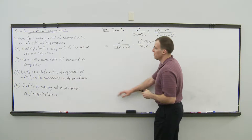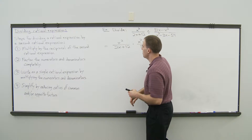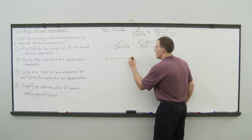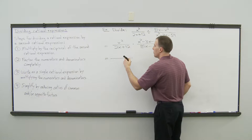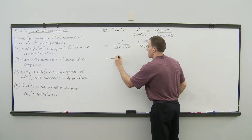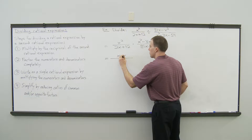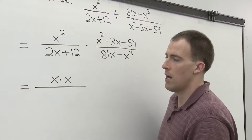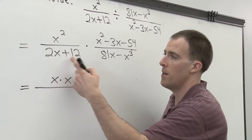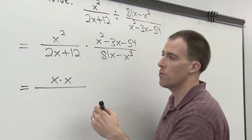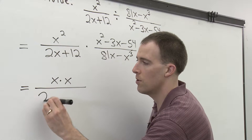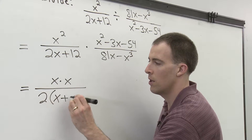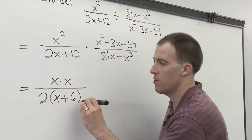The second step is to factor the numerators and denominators completely. The first numerator, x squared, we can write as x times x to help us see how to reduce later. For the denominator, 2x plus 12, there's a common factor of 2 that we can factor out, so that becomes 2 times x plus 6.